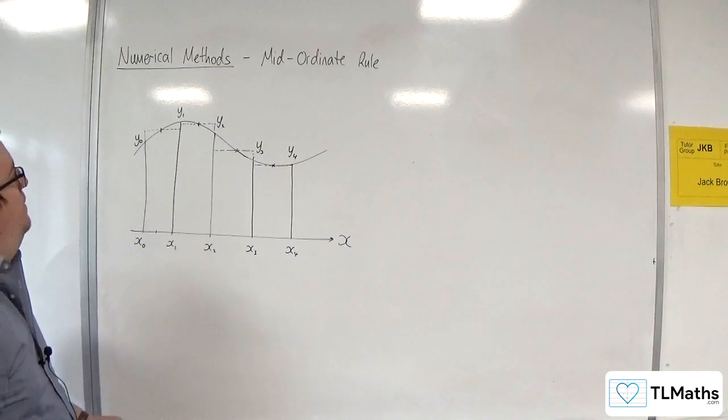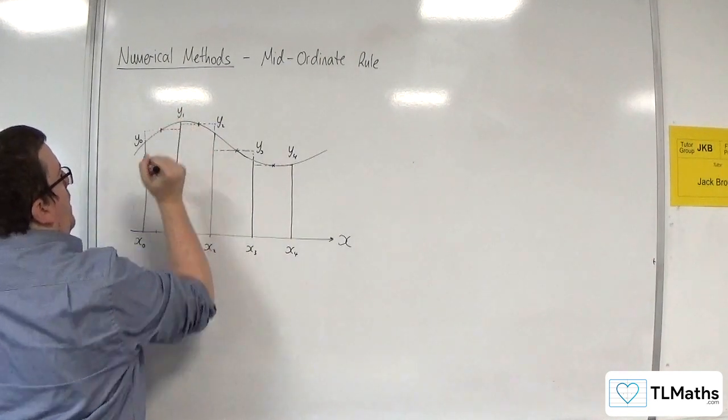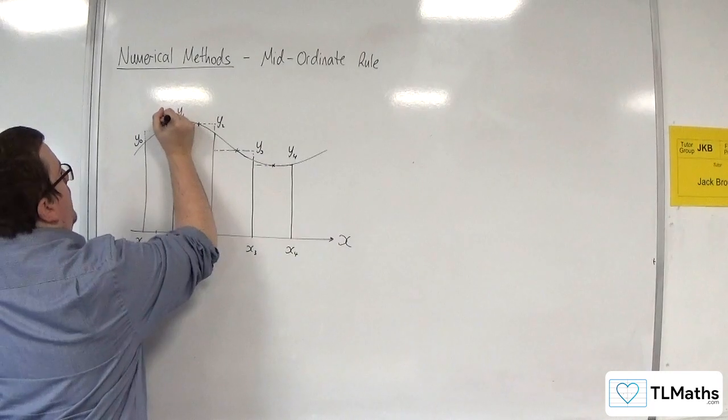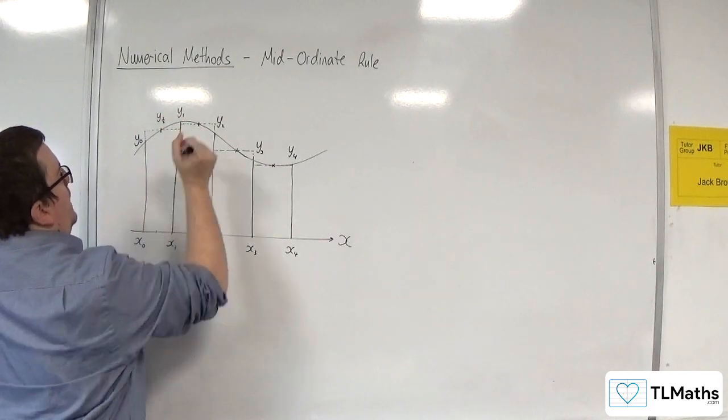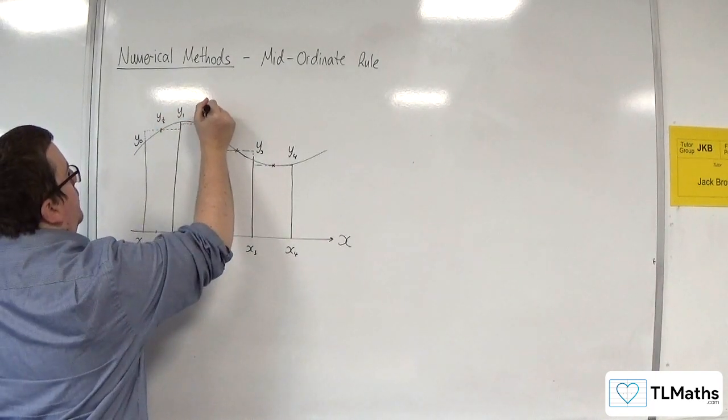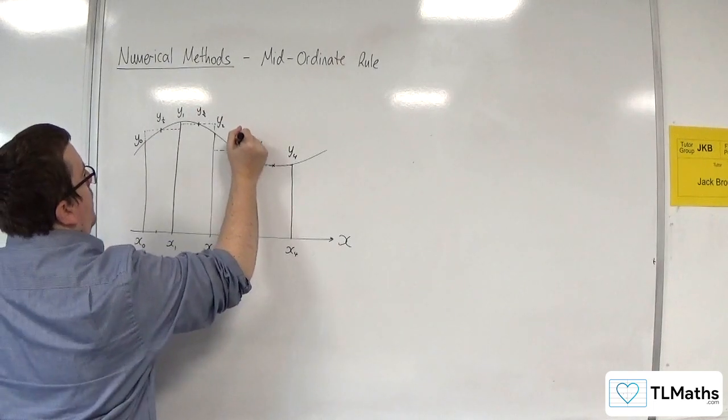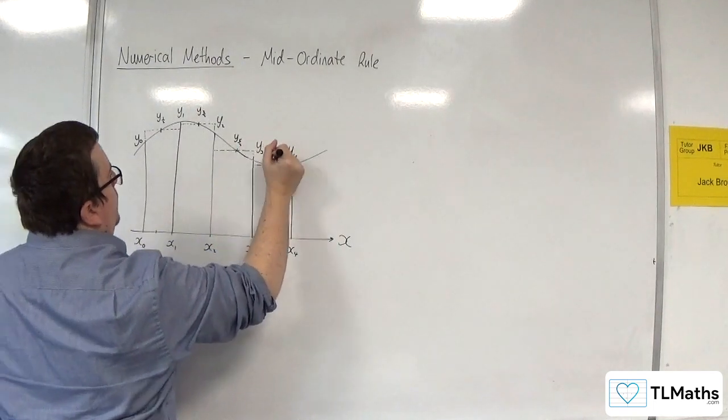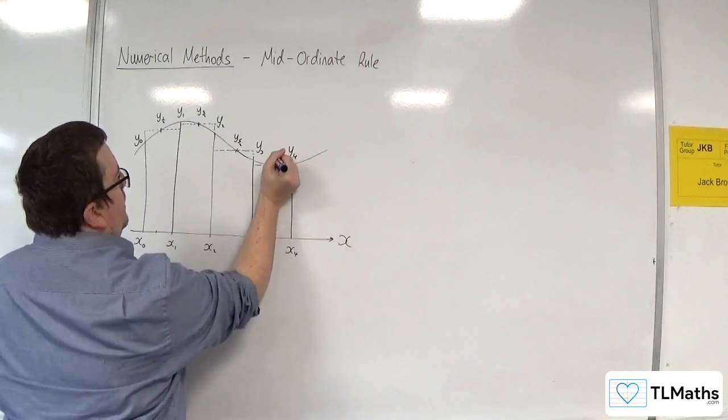At this point here, the y-ordinate would be y₁/₂, and here we would have y₃/₂, y₅/₂, and y₇/₂.